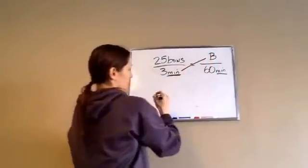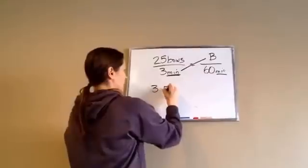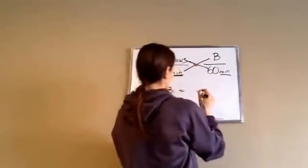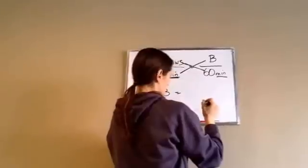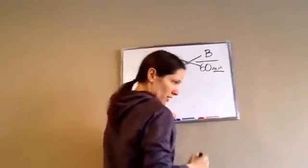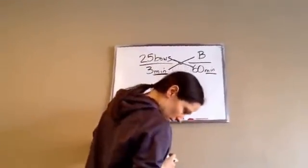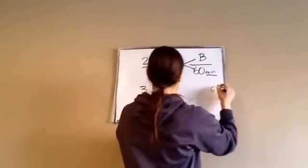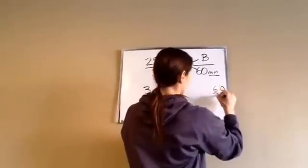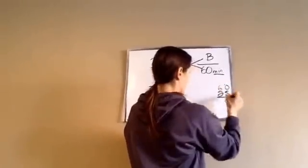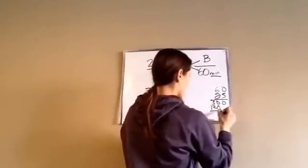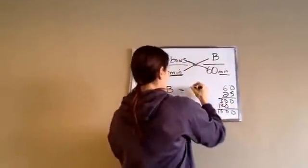So this is 3 minutes, 3 times B equals 60 times 25, which is going to end up being, I think, 150. 150, I'm just guessing. Let's just do math real quick. 60 times 25, maybe 1,500. Yeah, 1,500. So 1,500.